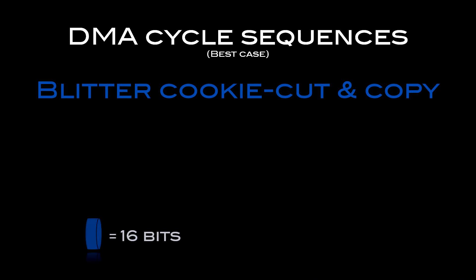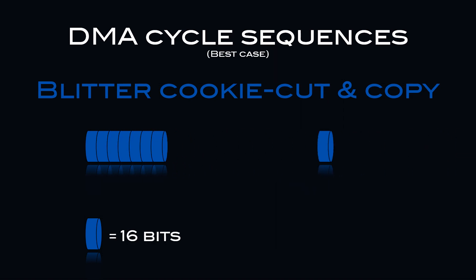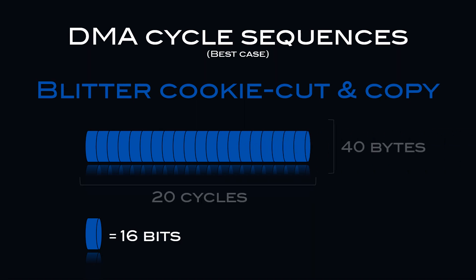Before we get started, all DMA sequences I'll be showing you are best-case ones — that is, they assume no other DMA is running on the bus. First, let's look at the DMA cycle sequences for the blitter running on its own, specifically in the most efficient channel modes available for cookie cut and copy. Each cycle the blitter operates, it accesses 2 bytes or 16 bits of memory. This means that over a period of 20 cycles, it will access 40 bytes in total.